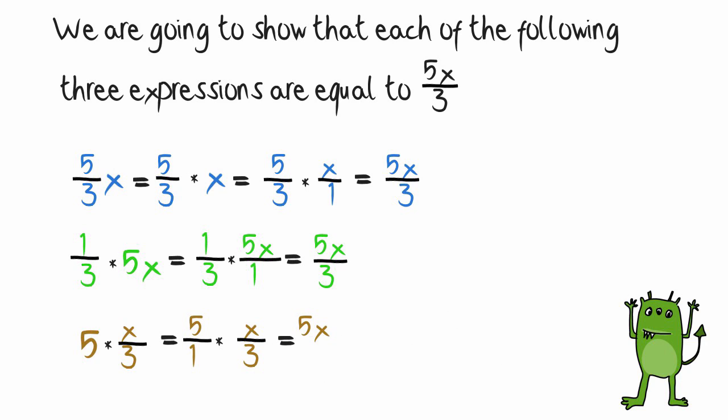The denominator times the denominator, 1 times 3, which is 3. And we now have the fraction 5x over 3. Three different expressions, same result: 5x over 3.